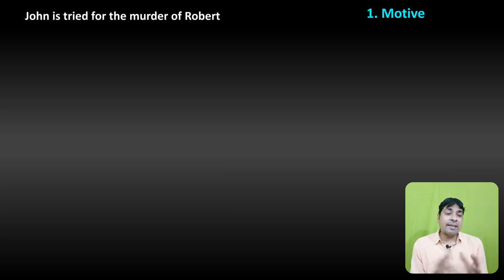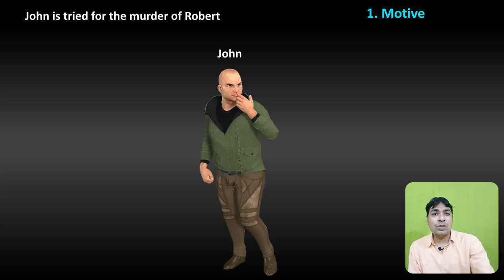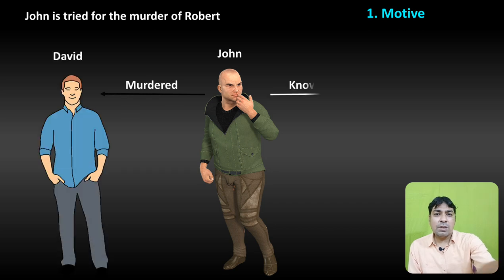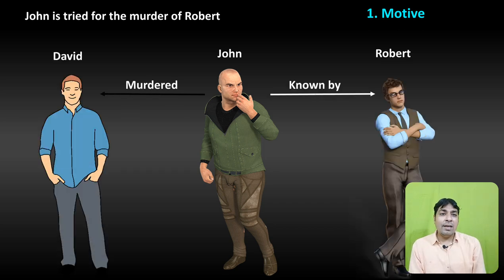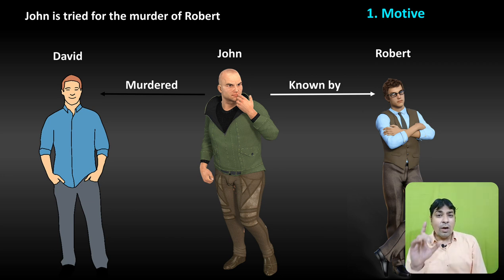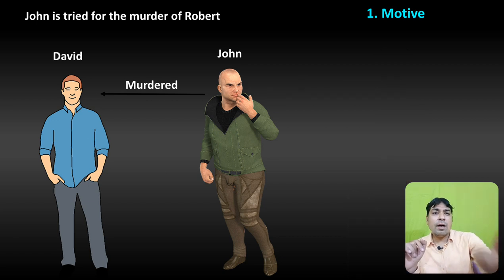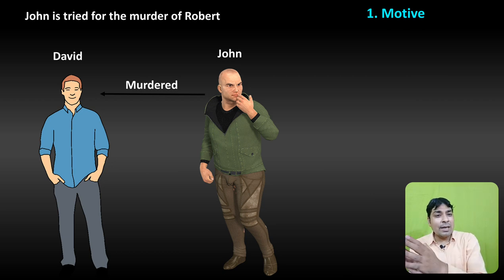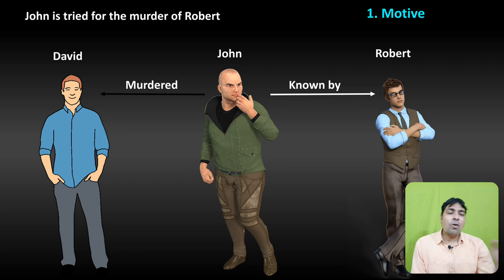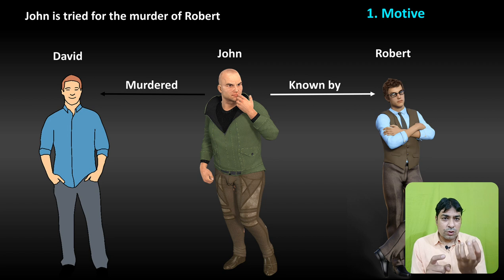There is an example of motive: John is tried for the murder of Robert. John ne Robert ka murder karne ki koshish ki hai. John ne already David ka murder kiya hua hai, aur yeh fact Robert ko pata tha. Court ke saamne question hai ke John ne Robert ka murder kiya hai ya nahi kiya hai.